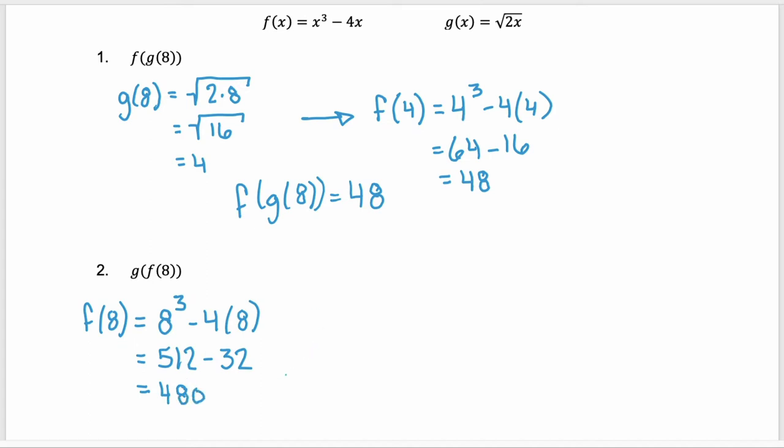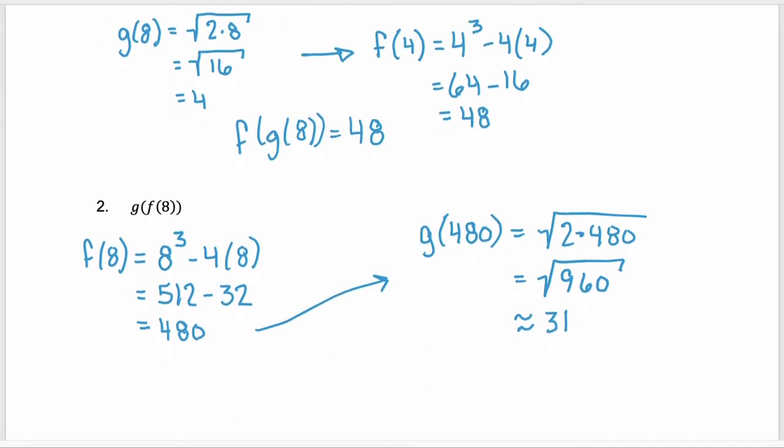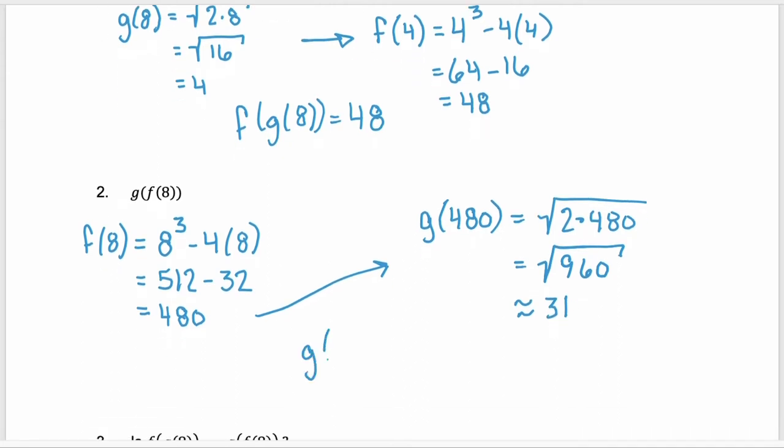We have f of eight. We substitute that into our g function. So we're finding g of 480. So we're taking the square root of two times 480 or the square root of 960. The square root of 961 is 31. So this is approximately 31. So we know that g of f of eight is equal to 31.